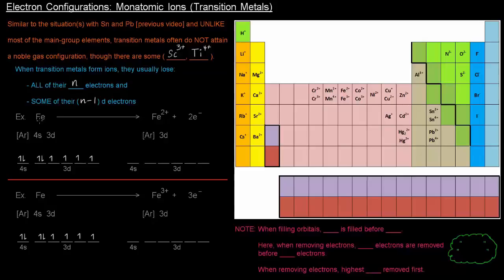If we think about iron, iron is right here in the transition block, I'll highlight it in blue. It's right here. It can form a plus 2 or a plus 3 ion. So, let's explain what's going on there.